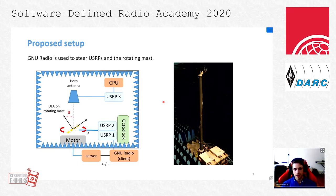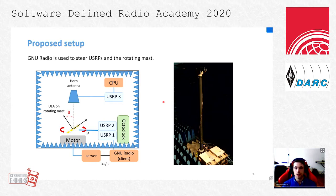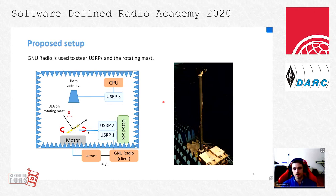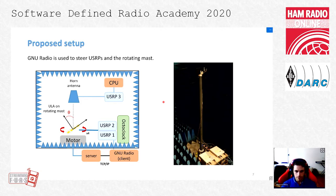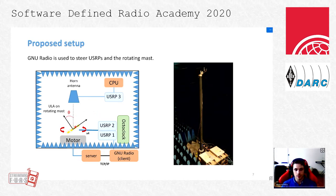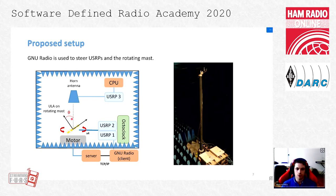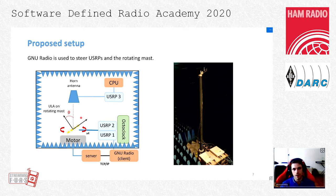The idea is that by steering our motor, we are able to perform rotation of our horn antenna. Our reference transmitter transmits a signal of constant power. The received signals are digitized by the USRPs and processed by our GNURadio clients. We need to record the signals received by the ULA and at the same time precisely control the rotation of the motor, so that at each recording time we can be sure of the value of the angle theta.